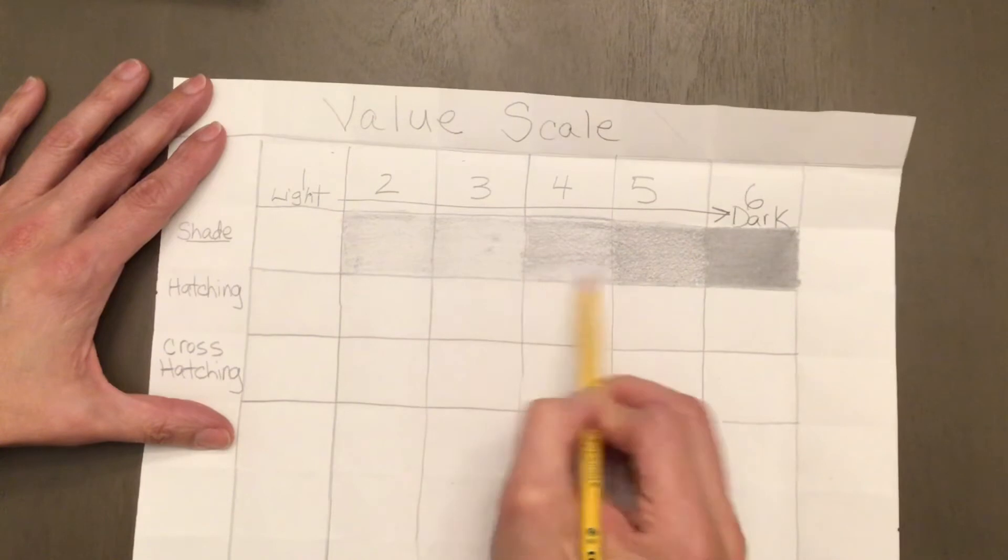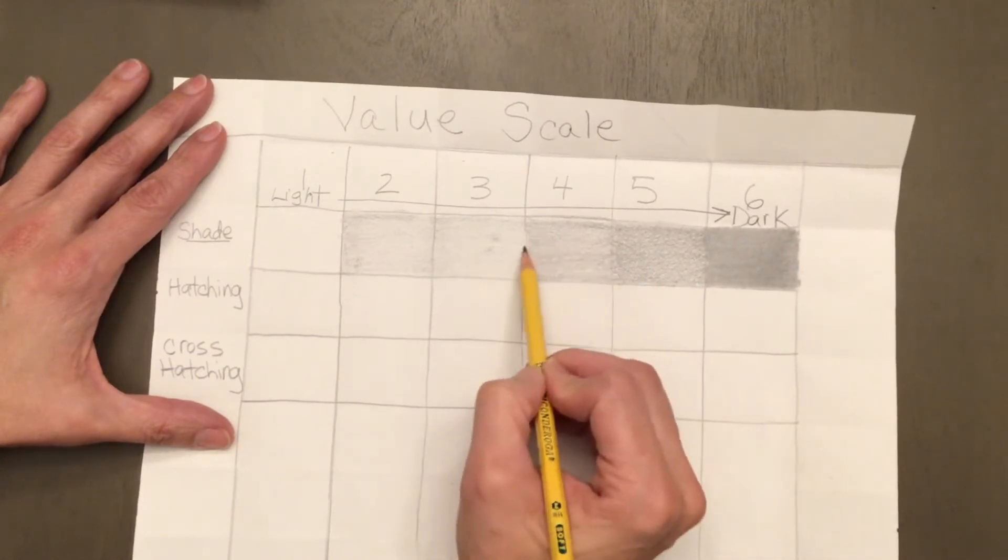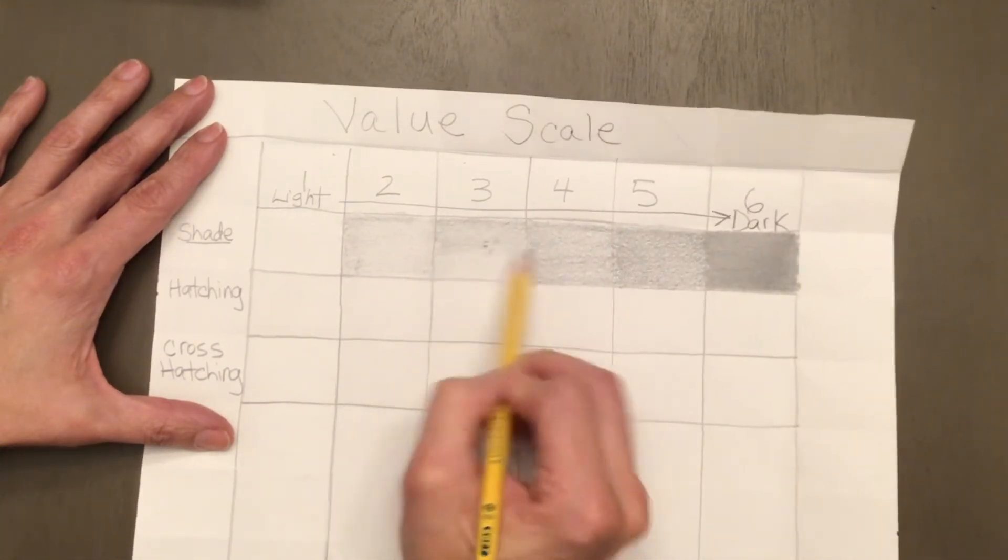Remember that the value scale starts out white and ends up at the darkest color you can get.